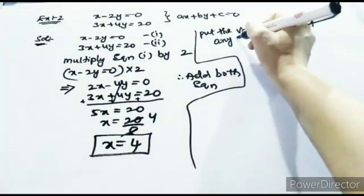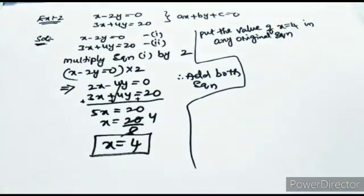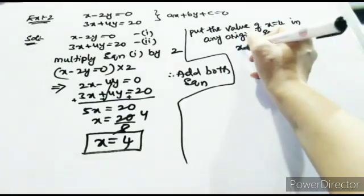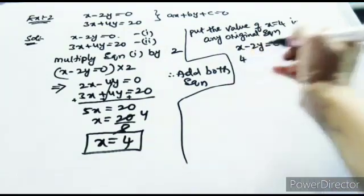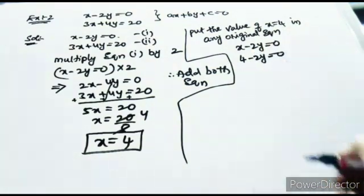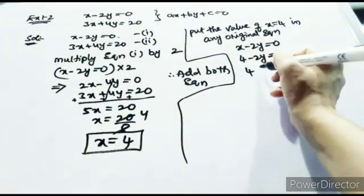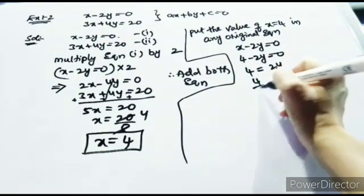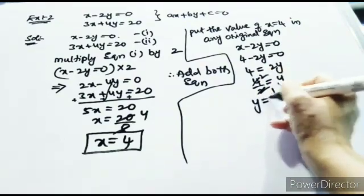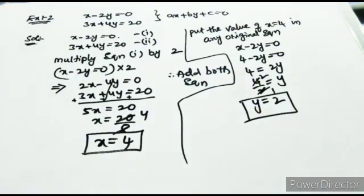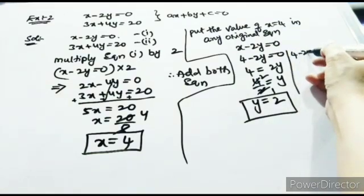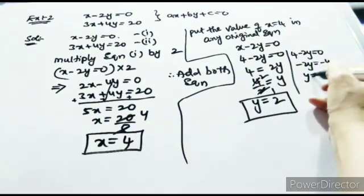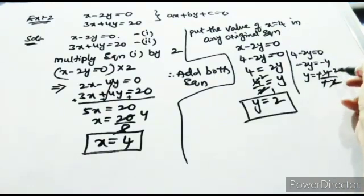After getting one variable's value, substitute it into any one of the original equations. Put x equal to 4 into equation 1: x minus 2y equal to 0. This gives 4 minus 2y equal to 0, so 4 equal to 2y, and y equal to 4 divided by 2, giving y equal to 2. Alternatively, minus 2y equal to minus 4, so y equal to 2. Both approaches give the same answer.